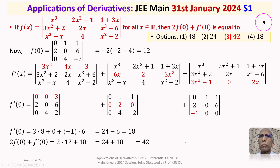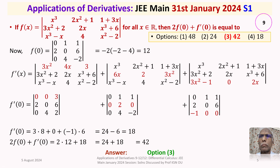The answer 42 appears against option 3. Therefore the answer to this question is option 3. That is the detailed discussion of this problem, and it is definitely an easy problem.